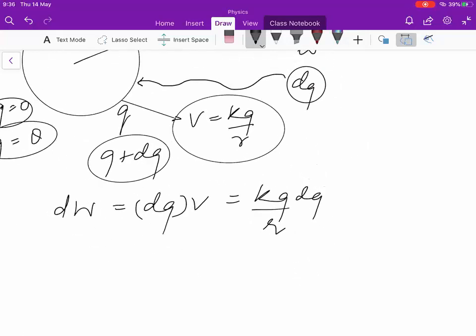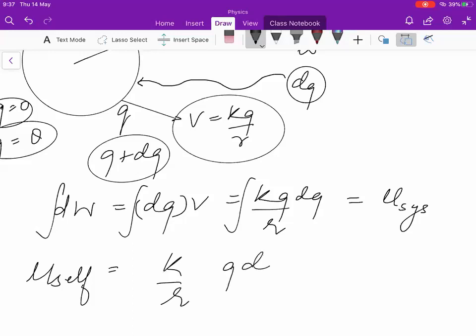Now, the total work done will be stored as the potential energy of the system, which is nothing but self energy. So, this is self energy, which should be given by (k/r) integral Q·dq.